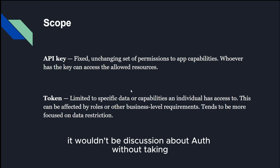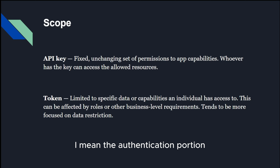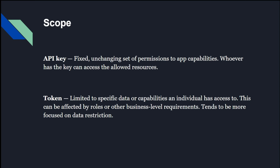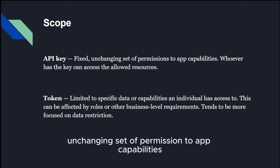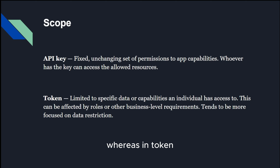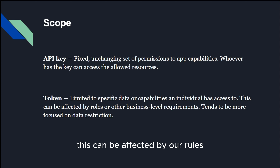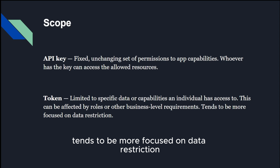It wouldn't be a discussion about auth without talking about permission scope — meaning the authentication portion, or what functionality can be performed when using the provided auth method. An API key provides a fixed, unchanging set of permissions to app capabilities; whoever has the key can access the allowed resources. Whereas a token is limited to the specific data or capabilities an individual has access to, which can be affected by roles or other business-level requirements, and tends to be more focused on data restriction.